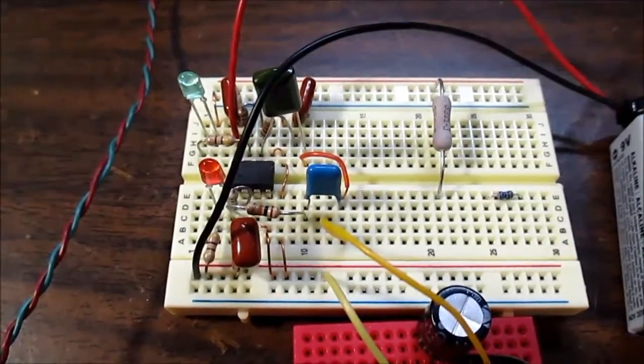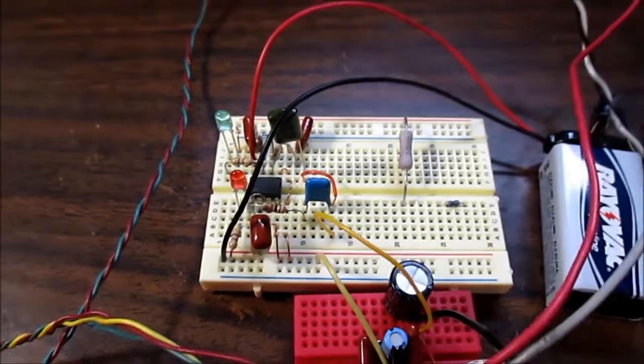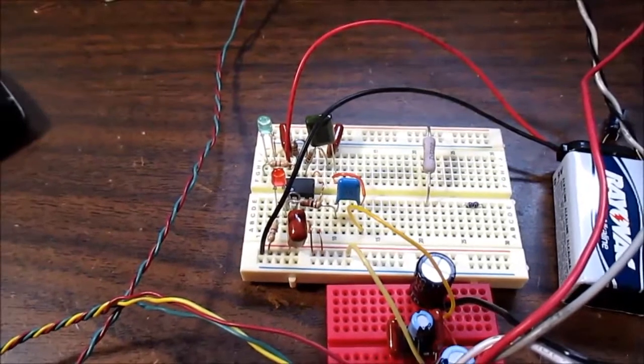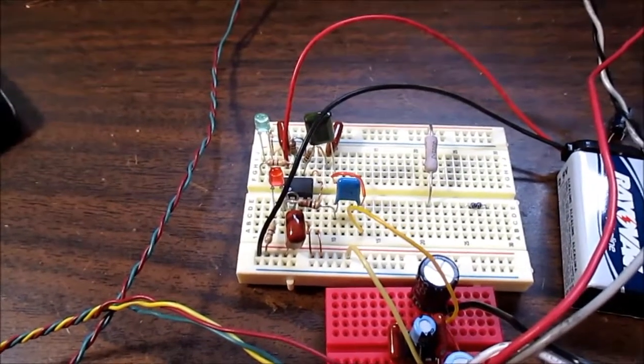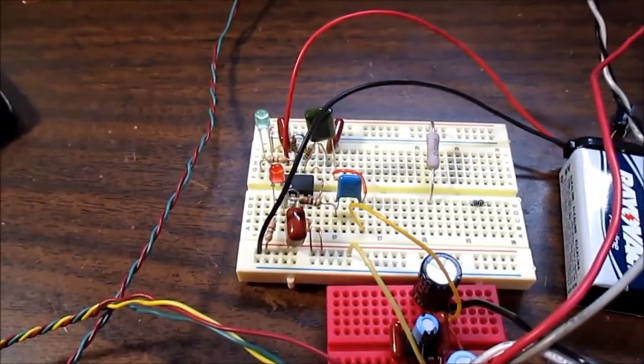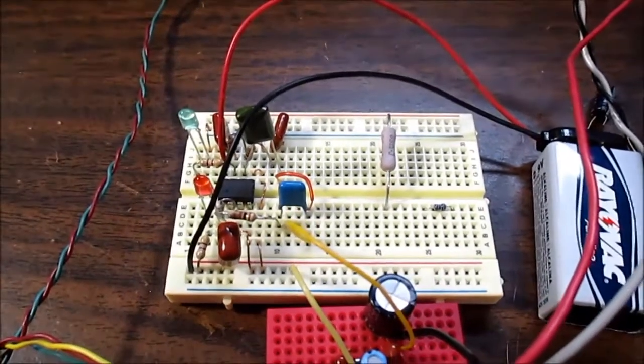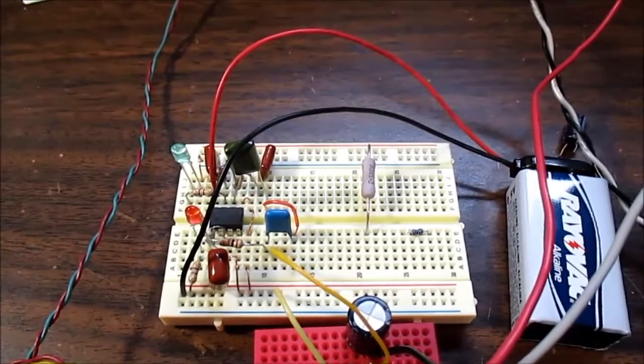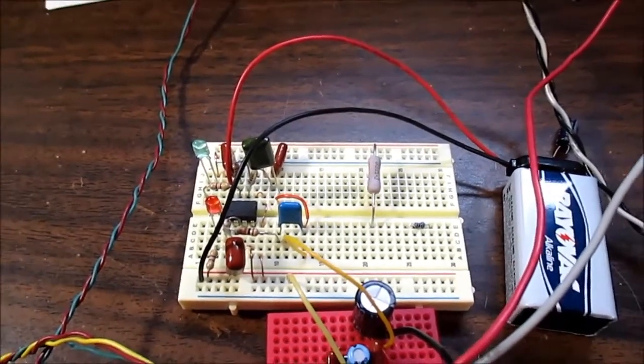Well, here is the groovy color organ. And what I'll do is demonstrate the circuit, and then I'll show you a schematic and some ways you can improve the circuit. This is a very basic circuit. And it does the job, but you can make it better if you want.